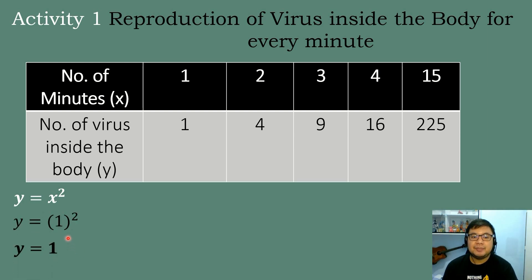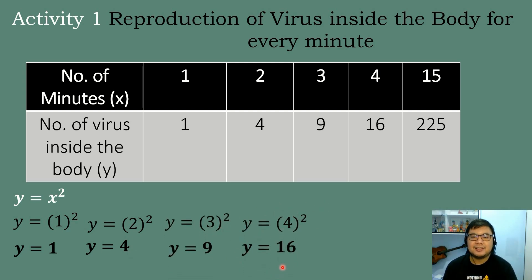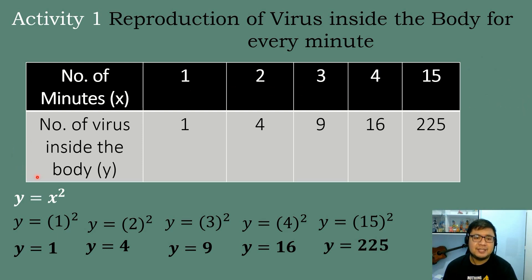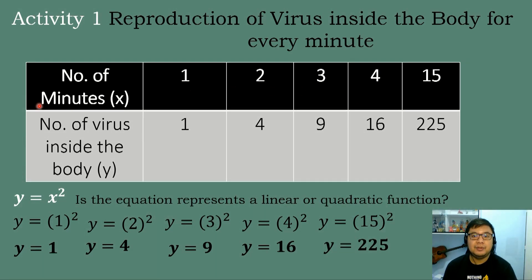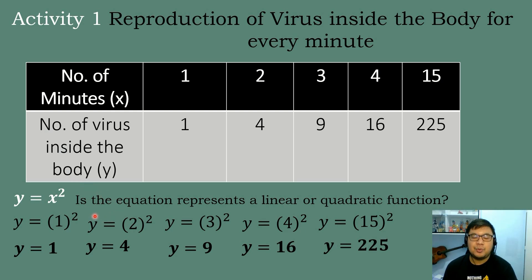So squaring the number: 1 to the second power is 1, 2 to the second power is 4, 3 to the second power is 9, 4 to the second power is 16, and 5 to the second power is 25. How about if the number of minutes is equal to 20? How many virus is inside the body? The correct answer is 400. So 20 to the second power, or 20 times 20, is equal to 400. So the equation will be y is equal to x squared, and this is an example of quadratic function.